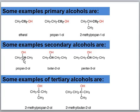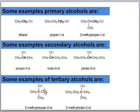Similarly, in secondary alcohols, the carbon atom bearing the hydroxyl group is attached to two alkyl groups, as seen in propan-2-ol, butan-2-ol, or 3-pentanol. However, in the case of tertiary alcohols, the carbon atom bearing the hydroxyl group is directly attached to three alkyl groups. Examples are 2-methylpropan-2-ol and 2-methylbutan-2-ol.